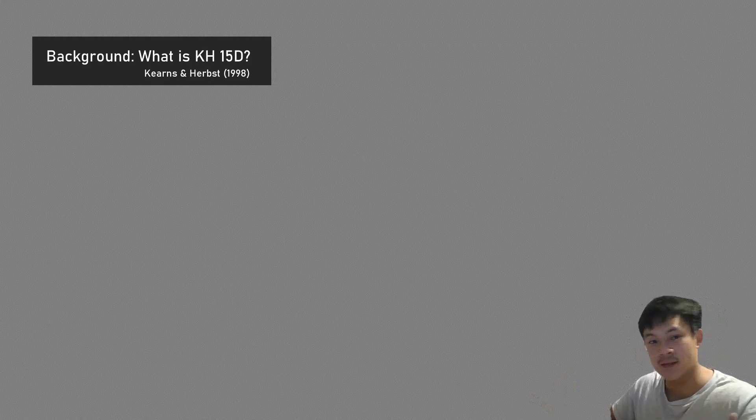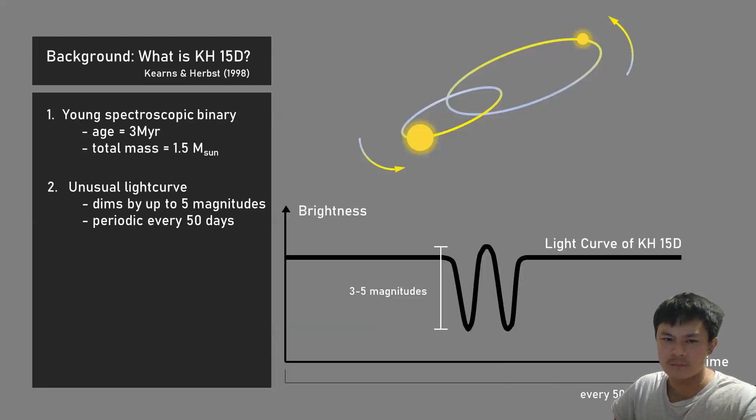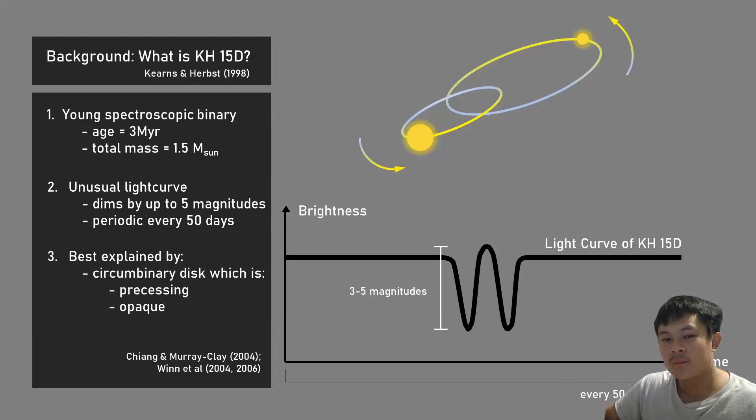But first, some background. What is KH15D? Discovered in 1998 by Kierns and Herbst, hence the KH. This system is a young spectroscopic binary at an age of about 3 million years and a total mass of about 1.5 solar masses. What's super interesting is that it has a very unusual light curve. It has this W-shaped looking thing which is periodic every 50 days and dips by almost up to five magnitudes. Very unusual. Fifteen years ago, Eugene Chang and Josh Nguyen best described this as a circumbinary disk which is processing and opaque.